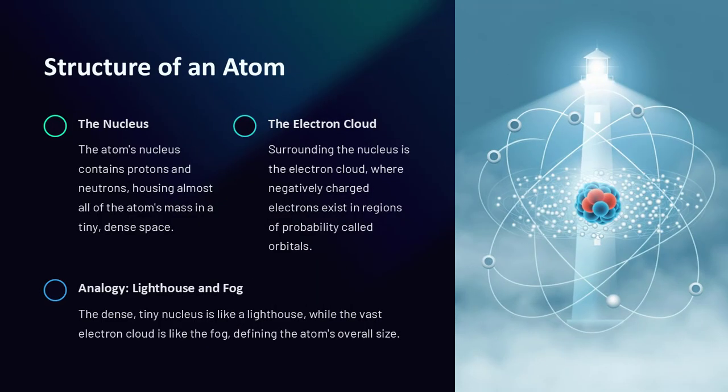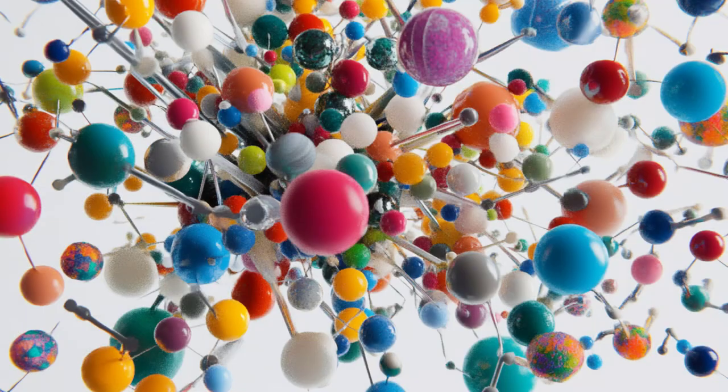Atoms consist of two distinct regions: the nucleus and the electron cloud. The nucleus, located at the center of the atom, contains protons and neutrons. Protons are positively charged, while neutrons carry no charge. This nucleus is extremely dense, housing almost all of the atom's mass in a space that's incredibly small. Surrounding the nucleus is the electron cloud, where negatively charged electrons move.